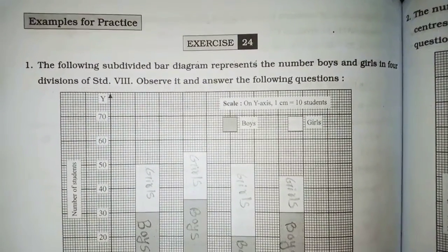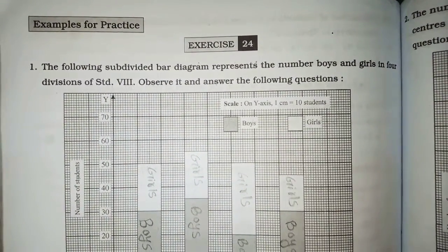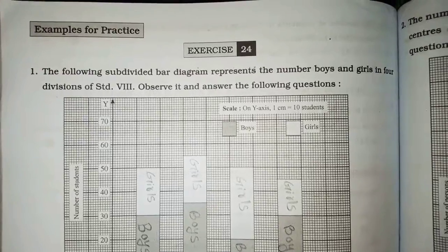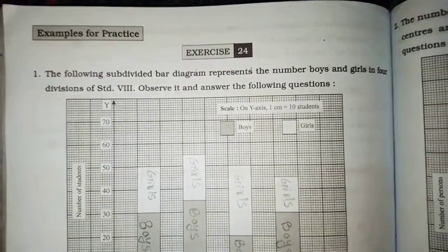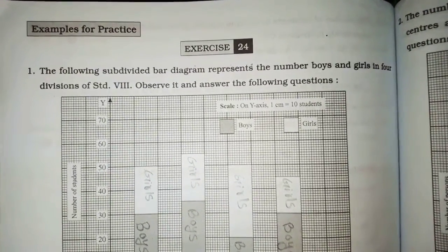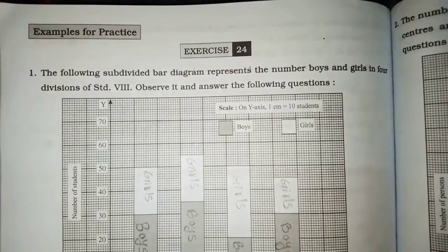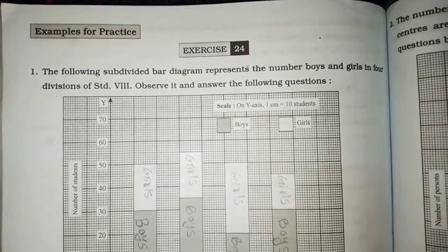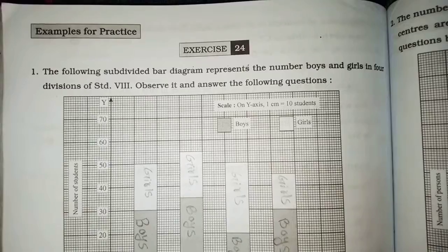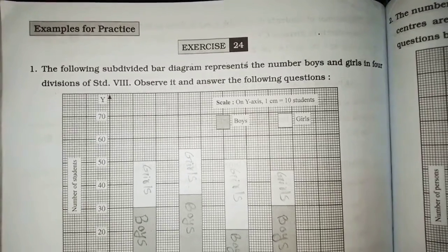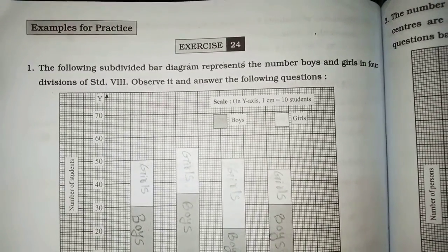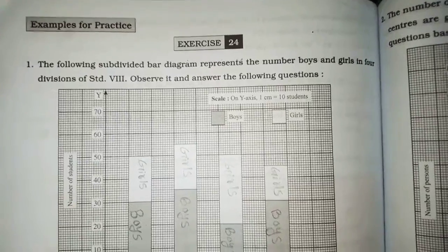8 Standard Scholarships Chapter No. 24 Exercise 24 Example for Practice Q1. The following subdivided bar diagram represents the number of boys and girls in plural divisions of standard 8. Observe it and answer the following question.